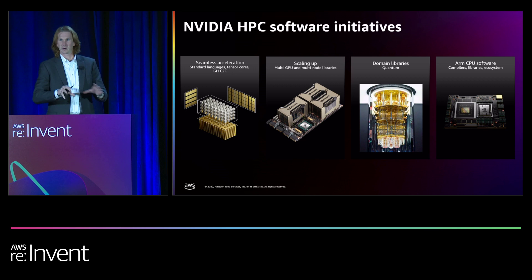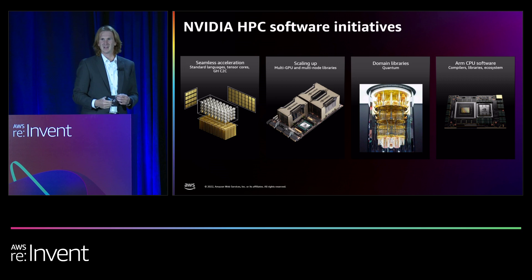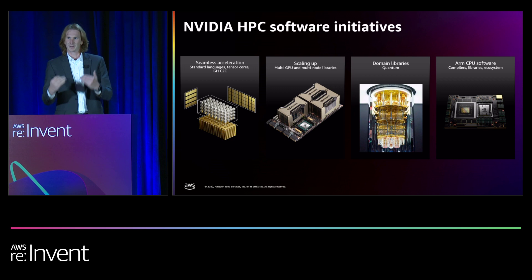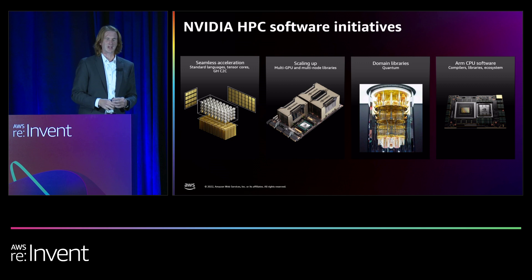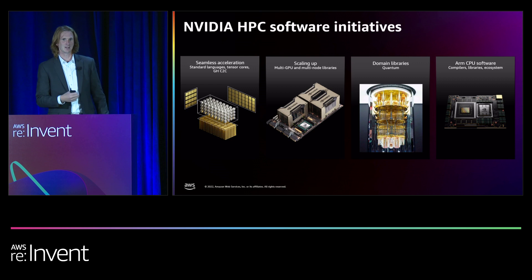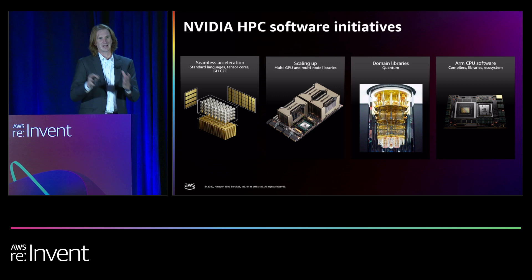NVIDIA also looks into the future to things like quantum computing — there's a huge quantum effort at NVIDIA. Closer to the present, we are building compilers, libraries, tools, and a huge software ecosystem for ARM CPUs, and that includes the AWS Graviton. Graviton 2 and Graviton 3 are supported platforms from the NVIDIA perspective. In fact, the AWS Graviton 3 shares a lot of design similarities with our own Grace CPU, and much of the software I'll show you today has already been ported and tuned for Graviton 3 in preparation for Grace.